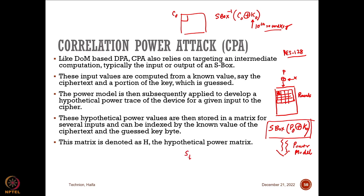The Hamming weight power model represents the number of ones in a byte. The Hamming distance model means it is the change of state that matters. If you have a state ST at time t that changes to ST+1, the Hamming distance is nothing but the Hamming weight of ST XORed with ST+1 — this gives you the number of bit changes between the two states.